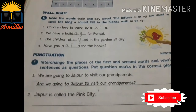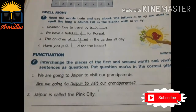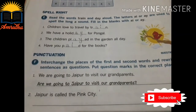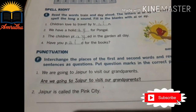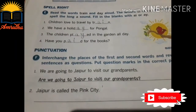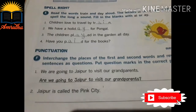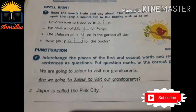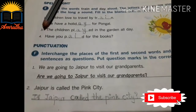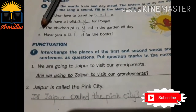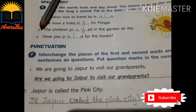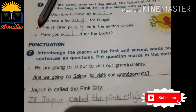Second one: Jaipur is called the pink city. You have to change this sentence into a question. For that, you interchange 'is' first and 'Jaipur' second. Is Jaipur called the pink city? We have changed Jaipur to second place and 'is' to first place. Now it became a question. At the end we keep a question mark.